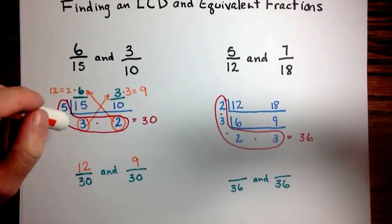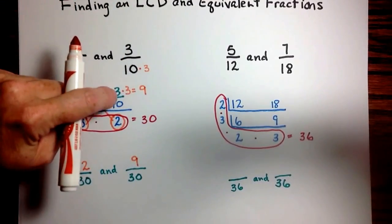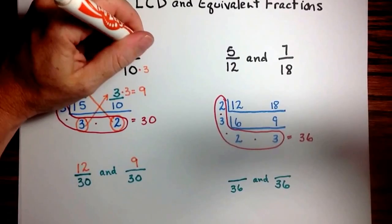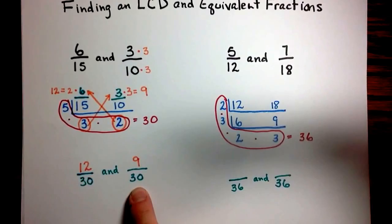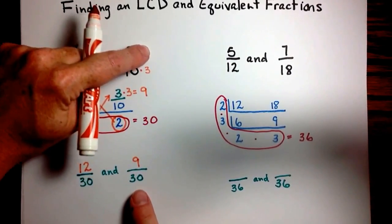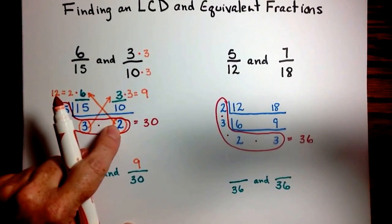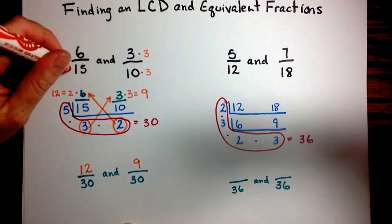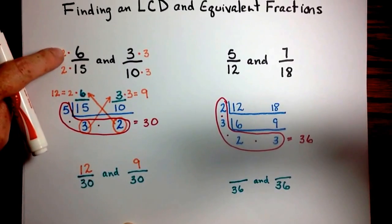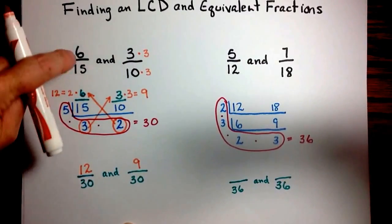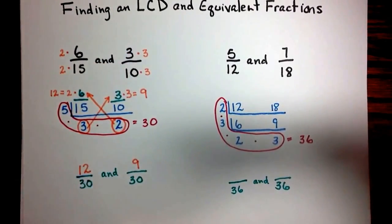So what this machine has helped us do is realize that this 3, when multiplied by 3, gives us our new numerator of 9 and the 30 denominator. And the same thing happened over here. The factor that we need to multiply by 15 in order to get our new denominator of 30 is 2. And when we multiply by the same factor on the top, we get 12. So 6 fifteenths is equivalent to 12 thirtieths, and 3 tenths is equivalent to 9 thirtieths.